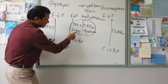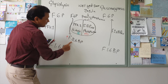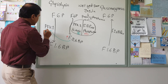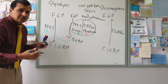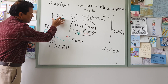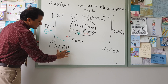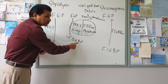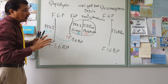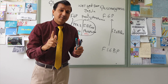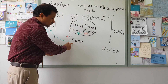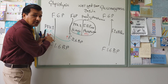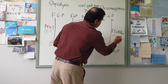PFK2 kinase activity is increased under insulin, so more and more fructose 2,6-bisphosphate is produced. This fructose 2,6-bisphosphate has a positive effect on PFK1 — phosphofructokinase 1 — which converts fructose 6-phosphate into fructose 1,6-bisphosphate, the main regulatory enzyme of glycolysis. So glycolysis is kept active. At the same time, the same molecule fructose 2,6-bisphosphate keeps fructose 1,6-bisphosphatase inactive.